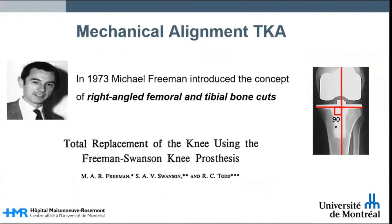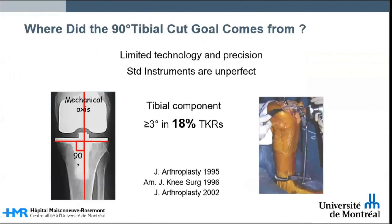Mechanical alignment in total knee arthroplasty as we know it today was introduced in 1973 by Michael Freeman when he introduced the concept of 90-degree femoral and tibial bone cuts. The idea to cut the tibial plateau at a right angle came from the limited technology and precision of instruments of that time. As you can see here, about 18% of subjects where standard instrumentation was used had variability within three or more degrees of the target.